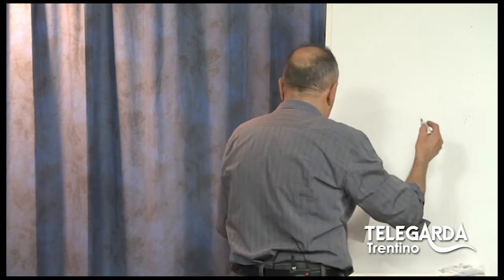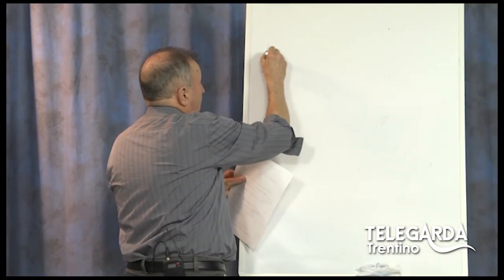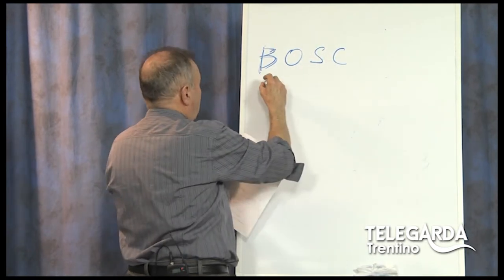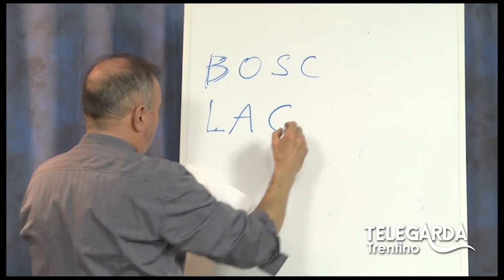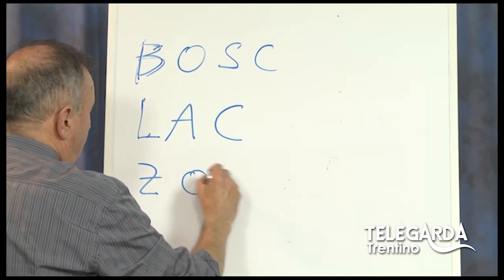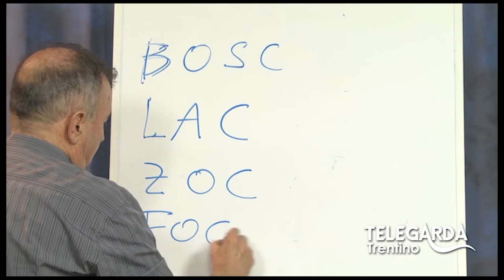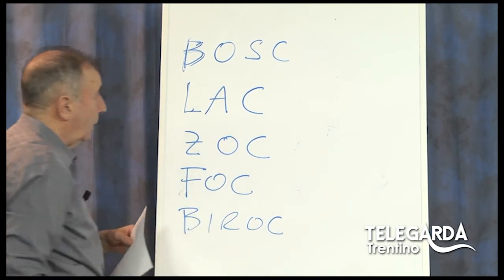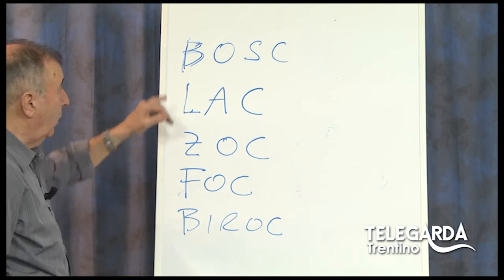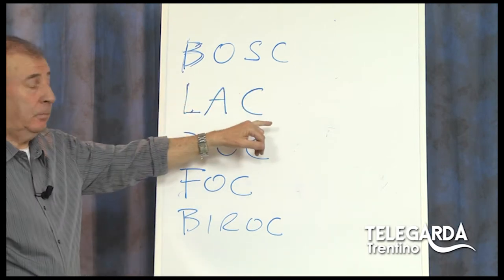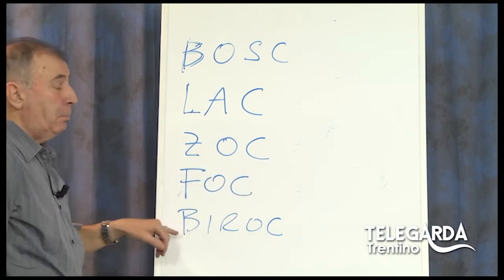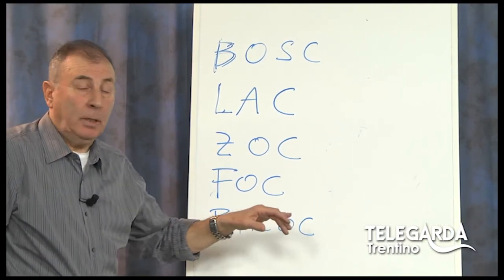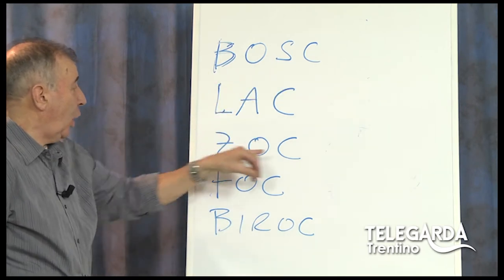Adesso vi scrivo delle parole. Eccole qua. Vi dico subito come si dovrebbe pronunciare: bosque, lacque, zocque, foque, birocque. No — birocque, il caretello, il caret, il birocque. Come mai? Bosque, lacque, zocque, foque, birocque. Come si fa a distinguere la diversa pronuncia?